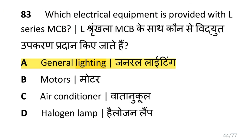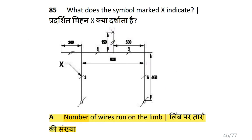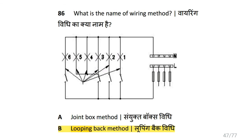Which electrical equipment is provided with L series MCB? That is general lighting. Why is the looping back method preferred in domestic wiring installation? That is because no separate joints are used. What does the symbol marked X indicate? That is the number of wires run on the limb. What is the name of this wiring method? That is looping back method.